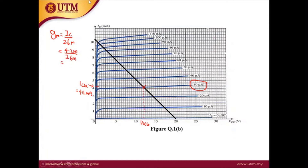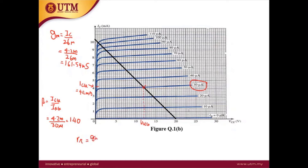With ICQ = 4.2 mA, Gm = 4.2 mA / 26 mV = 161.54 mA/V. Next, beta = ICQ / IBQ = 4.2 mA / 30 µA = 140. Now Rpi = beta / Gm = 140 / 161.54 mA/V = 866.7 ohms.